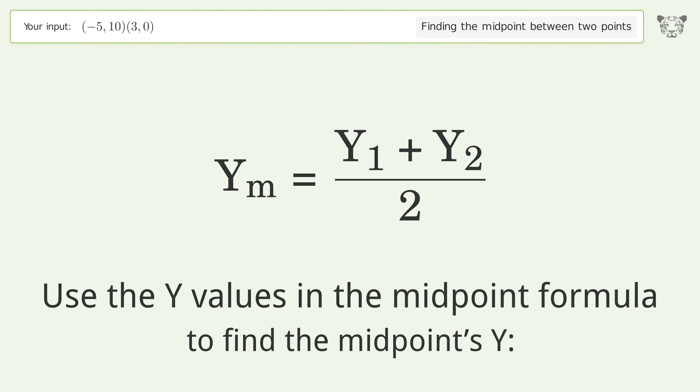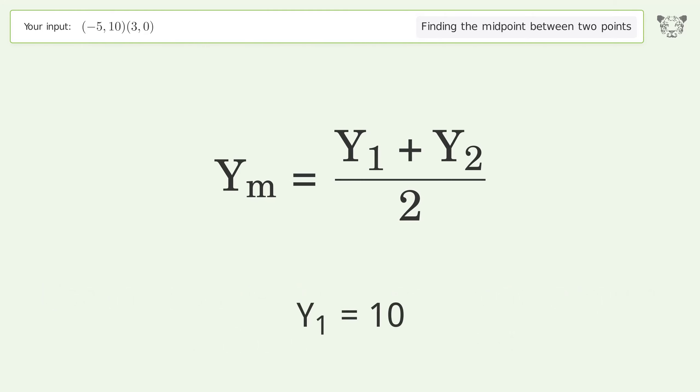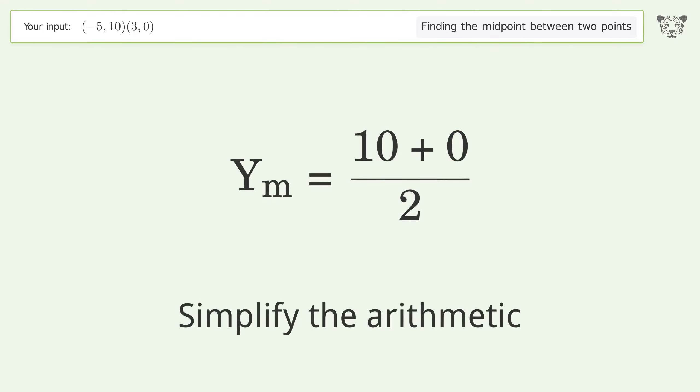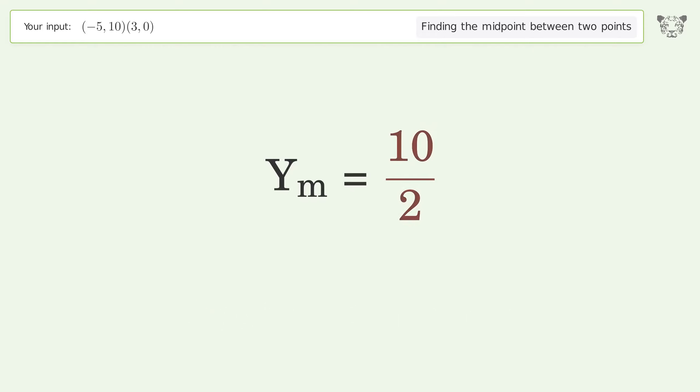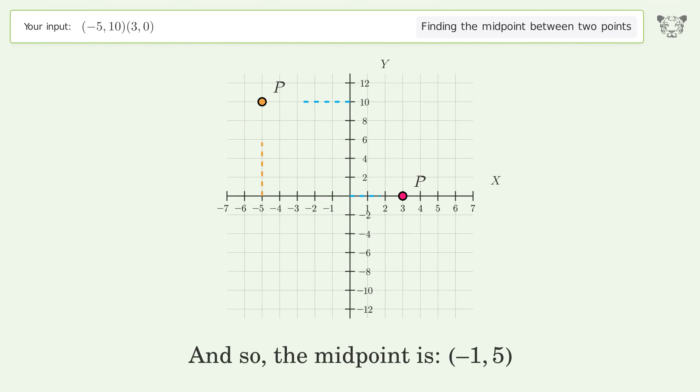Use the y values in the midpoint formula to find the midpoint's y. Y one equals ten. Y two equals zero. Simplify the arithmetic. And so, the midpoint is negative one comma five.